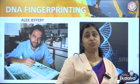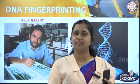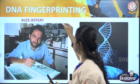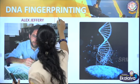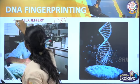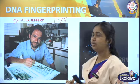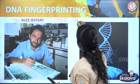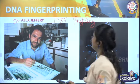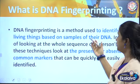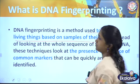Mr. Alec Jeffreys helped us to figure out that there is a 0.1% difference in our DNA, and this was in the year 1985. This DNA fingerprinting is otherwise called DNA profiling — we can use the term profiling as well. So what is DNA fingerprinting? It is a method used to identify living things based on samples of their DNA.